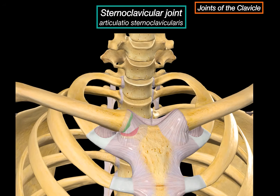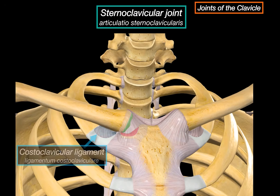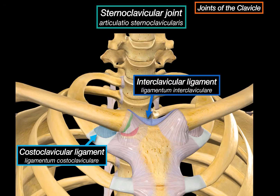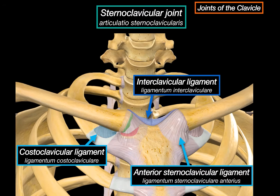Now let's look at the supporting ligaments that stabilize this joint. Just below, you can see the costoclavicular ligament connecting the inferior surface of the clavicle to the first rib. Above that, running horizontally across the top, is the interclavicular ligament, linking both clavicles across the jugular notch. And right here in the front, attaching the clavicle to the sternum, is the anterior sternoclavicular ligament.